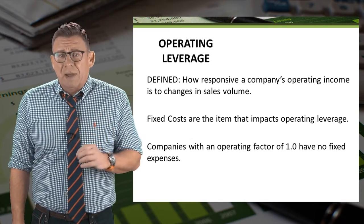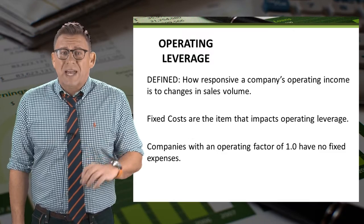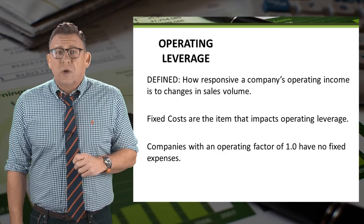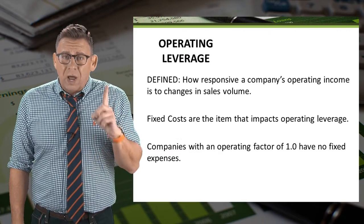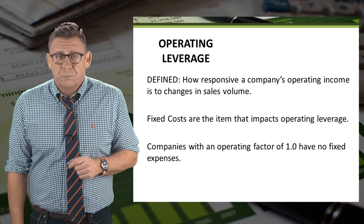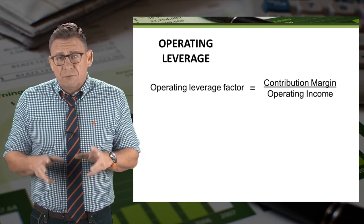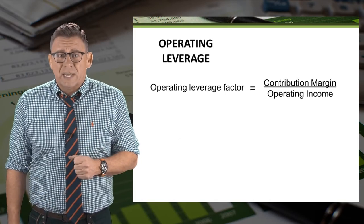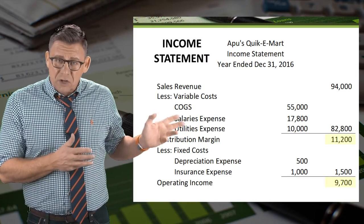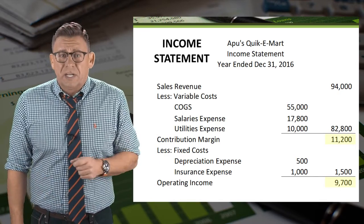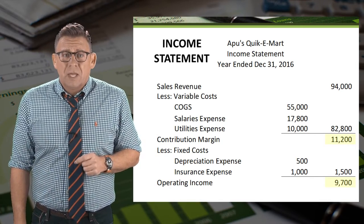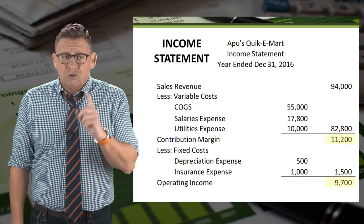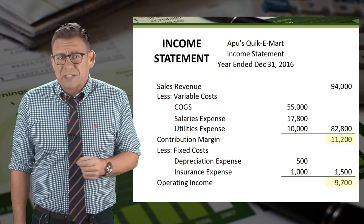Companies with high amounts of fixed costs are going to have high operating leverage factors. Companies with an operating factor of one will have no fixed costs. The formula for operating leverage factor is contribution margin divided by operating income. Here I've highlighted the contribution margin and operating income in our sample company. Since this company doesn't have large amounts of fixed costs, you should already conclude that the operating leverage factor will be quite small.